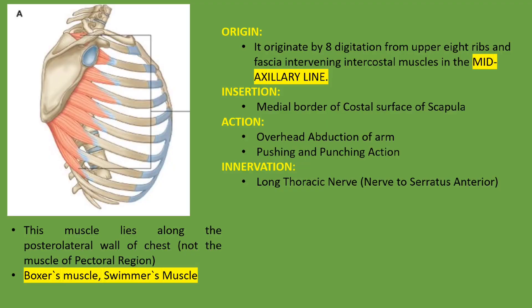The next muscle is the serratus anterior muscle, which is an important muscle clinically — especially for boxers and swimmers. It originates by eight digitations from the upper eight ribs and the fascia of the intervening intercostal muscles at the mid-axillary line. It gets inserted on the costal surface of the scapula along its medial border, with eight digitations corresponding to its origin. Its action is overhead abduction of the arm and pushing or punching actions. Its important innervation is the long thoracic nerve, also called the nerve of Bell, which is a branch of the brachial plexus.